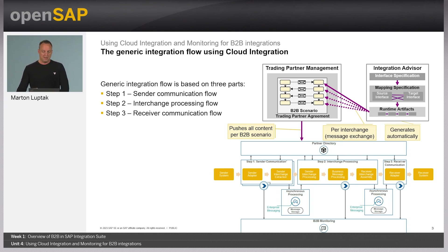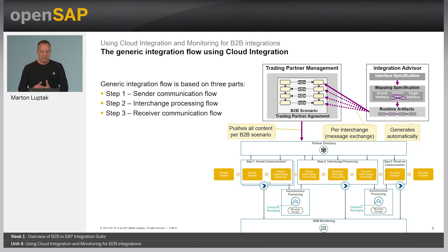The generated artifacts from integration advisor are only referenced in trading partner management. Once the whole scenario is activated — we will see the details later — the artifacts are pushed towards the partner directory, which includes the binaries and the interchange-relevant information: the source and target message implementation guidelines, as well as the mappings.